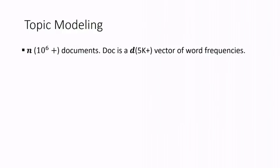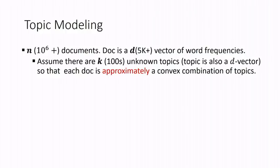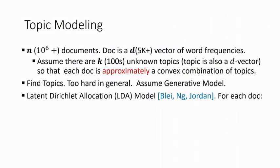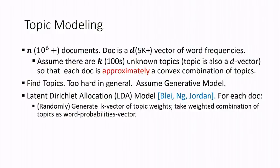Topic modeling: you have lots of documents — up to 100 million. There are K unknown topics you have to find. Documents are represented as bag-of-words: word frequencies normalized to sum to one; order is thrown away. Your job is to find the topics. That's too hard in general — NP-hardness has been shown. One way out is to assume a generative model, a stochastic model. The most used model is LDA — Latent Dirichlet Allocation — by Blei and Jordan.